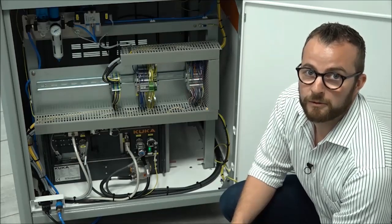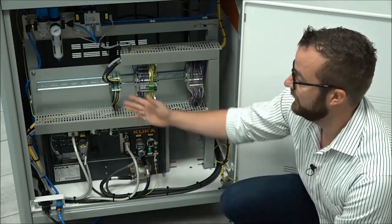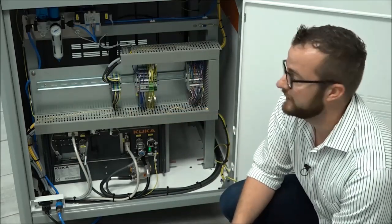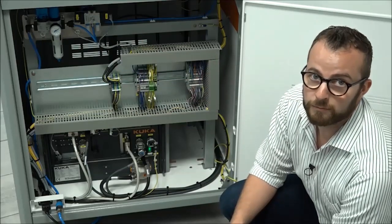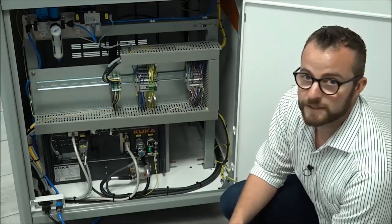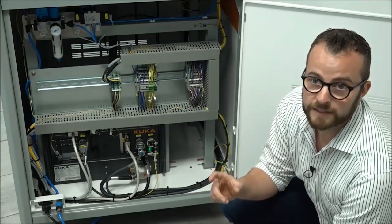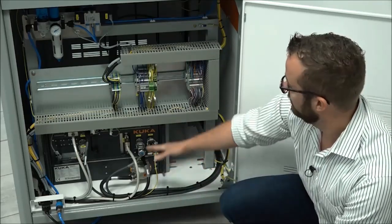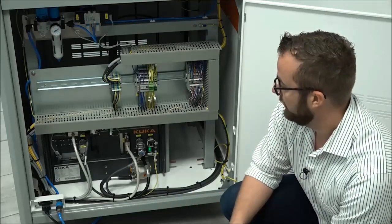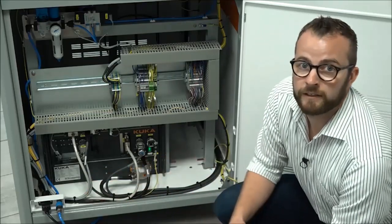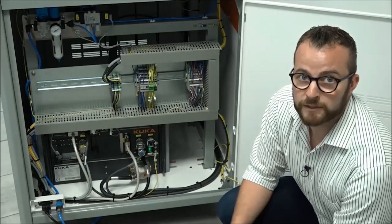On this side all the electrical components are placed. Here is a lot of space for customer specific installations. Above the electrical components the pneumatic components are located. They are necessary for the closing and opening of the gripper. Below the electrical components there is the KR4 compact and the electrical and pneumatic interface of the whole cell.